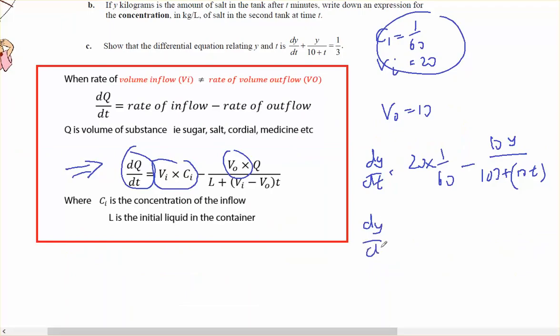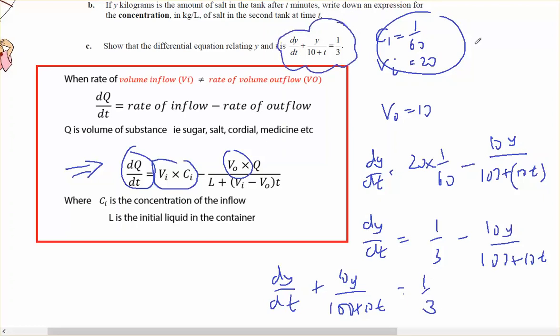dy/dt equals 1/3 minus 10y over 100 plus 10t. Therefore dy/dt plus 10y over 100 plus 10t equals 1/3, which is exactly what I need to show.